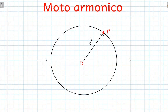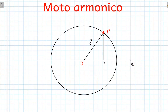Ora prendiamo uno degli assi cartesiani, per esempio l'asse X che abbiamo già rappresentato, e facciamo la proiezione ortogonale della posizione del punto P su quest'asse cartesiana. Vado ad abbassare la perpendicolare a partire dal punto P sull'asse X e vado a indicare la posizione sull'asse X di questa perpendicolare, che indichiamo con PX. A questo punto tracciamo anche il vettore che unisce l'origine O con la posizione di questa perpendicolare, e questo vettore lo indichiamo con X.